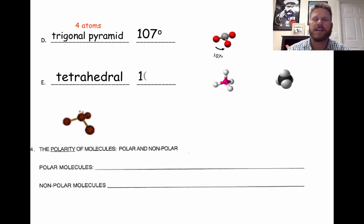The last shape is called a tetrahedral. Tetrahedrals involve five atoms bonding together and there are 109.5 degree bond angles between these atoms.